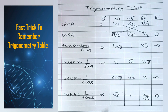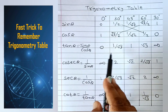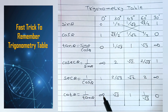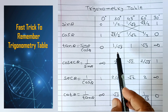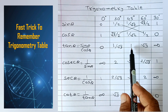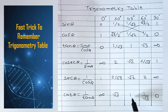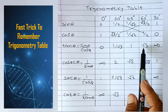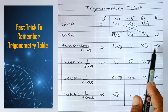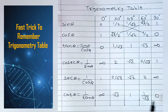Cot theta equals 1 upon tan theta. So here: 1 divided by 0 is infinity; 1 upon 1 upon root 3 is root 3; 1 divided by 1 is 1; 1 upon root 3; and 1 divided by infinity is 0. Thank you students.